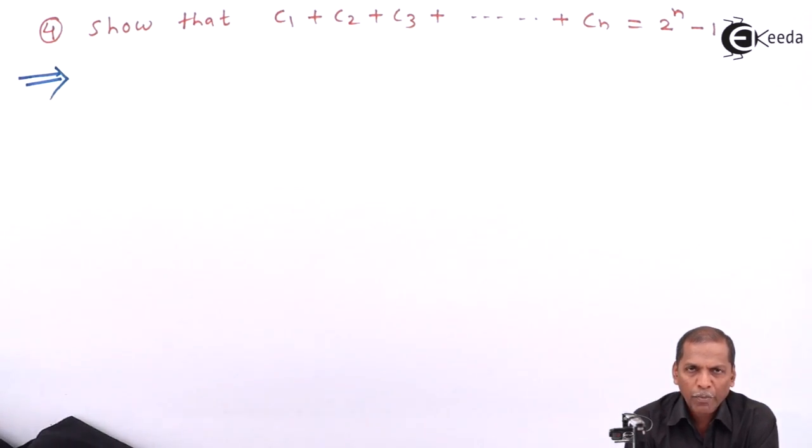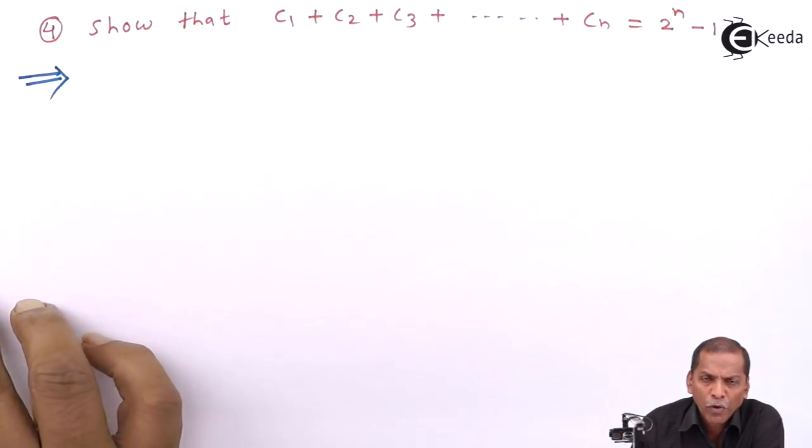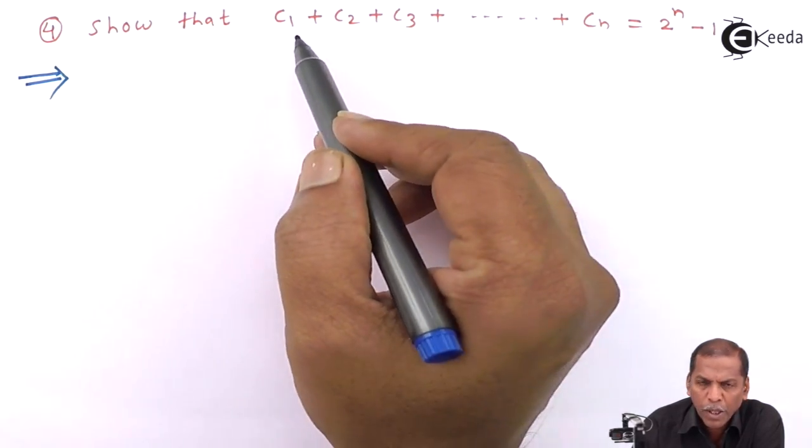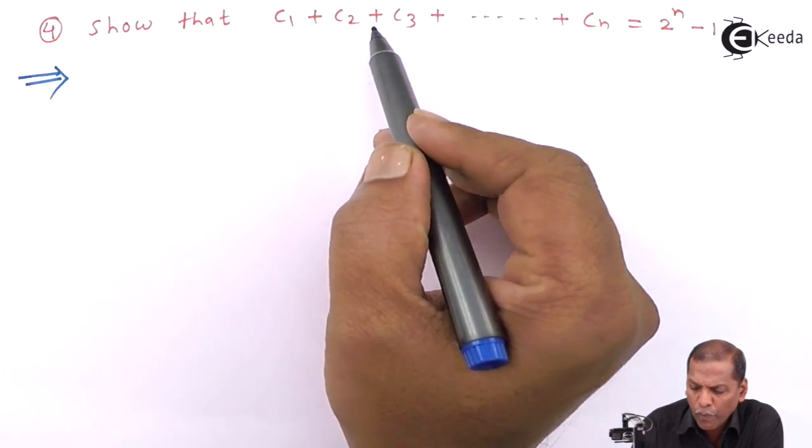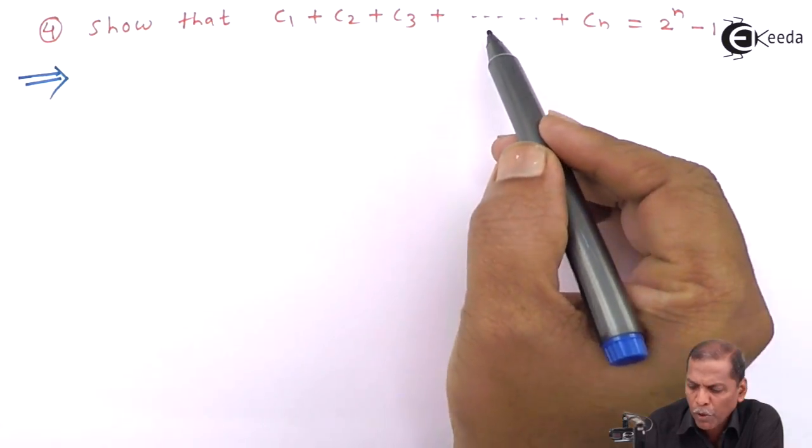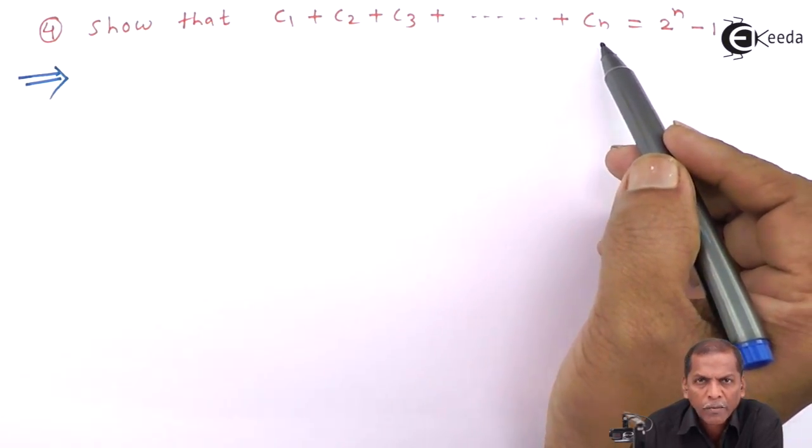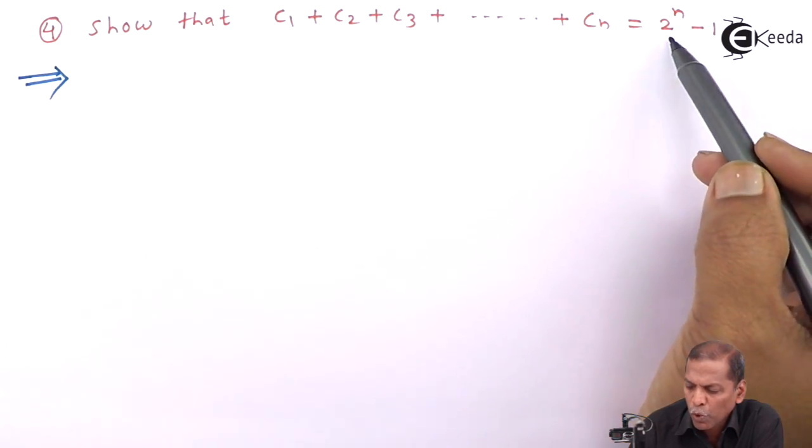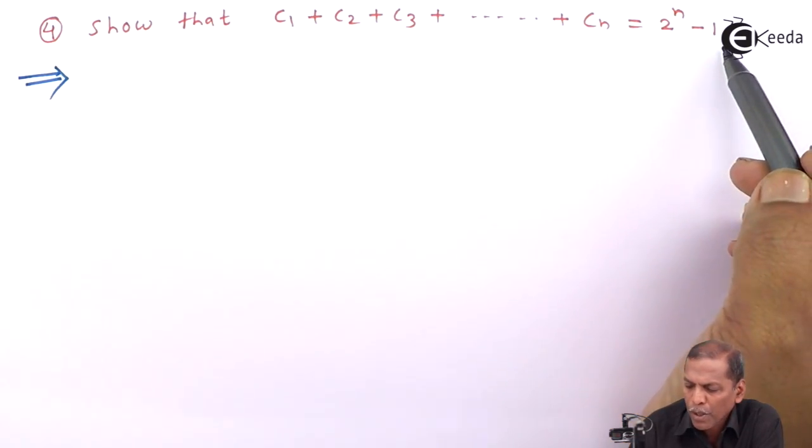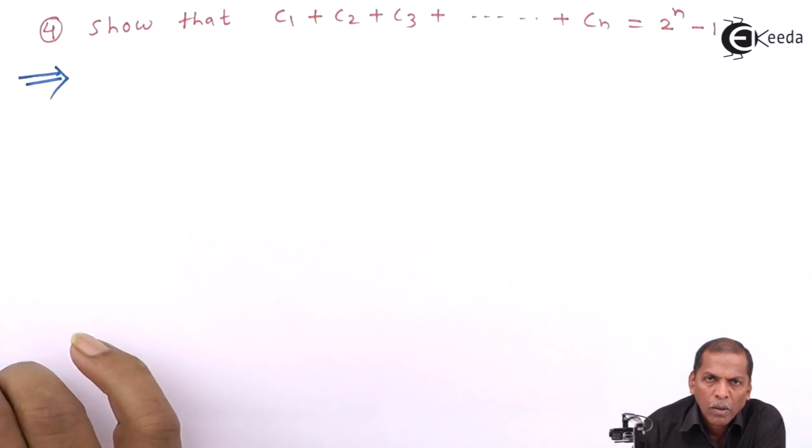Hello friends, now we see problem number four, which is also based on binomial coefficients and result one and result two of chapter method of induction and binomial distribution. In problem number four, we have to show that C1 plus C2 plus C3 plus going on plus Cn equals 2 raised to n minus 1.